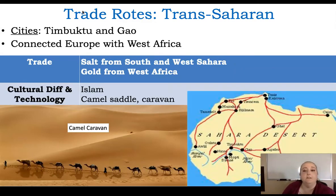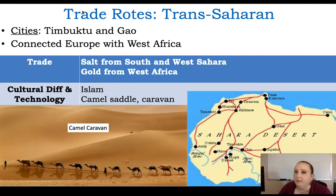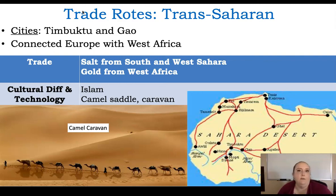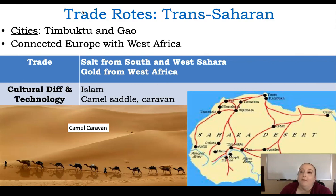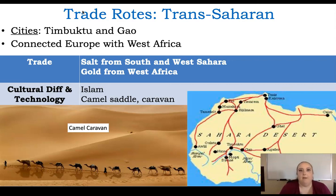The last one is the Trans-Saharan, which goes throughout Africa. The two big cities are Timbuktu and Gao. This route connected Europe to West Africa — you've probably heard of Mansa Musa, and this connected Europe to his kingdom. Salt from the southern and western Sahara was traded, and gold from West Africa went along this route. Islam spread because of this route, and the camel saddle and caravan were key to it. These three trade routes started before 1200 and continued after 1200 — that's why this foundational unit is so important, because history doesn't start in 1200. You need to know what happened before 1200 and what continues through 1200 and beyond.